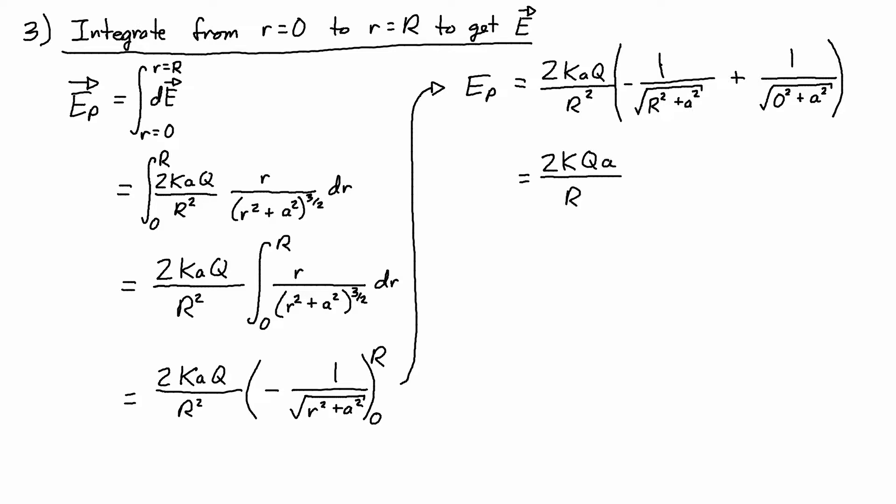And then I'm rearranging the top slightly, switching q and a, because I notice that when I have 1 over the square root of 0 squared plus a squared, I get 1 over the square root of a squared, which is equal to 1 over a. And I can multiply that in to help simplify the expression.